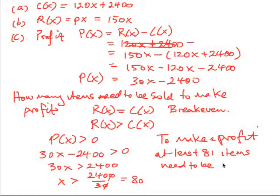If it's only 80, then that's our break-even. So at 80 items, the business breaks even. So at 81, they start making a profit.